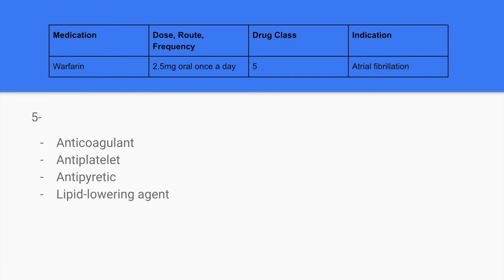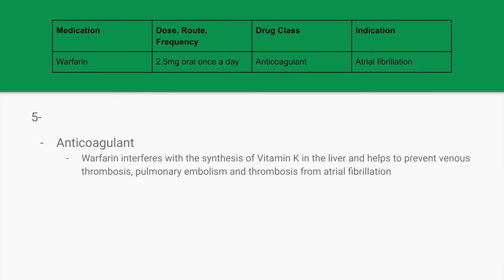The fifth medication is warfarin, given 2.5mg oral once a day. We will be selecting the drug class, and it is indicated for atrial fibrillation. Warfarin is an anticoagulant. It interferes with the synthesis of vitamin K in the liver and helps to prevent venous thrombosis, pulmonary embolism, and thrombosis from atrial fibrillation. People with atrial fibrillation are at higher risk of clots developing because their heart is not pumping as effectively, and blood can become stagnant in the heart, making them at risk for forming clots and throwing clots to their brain or lungs.